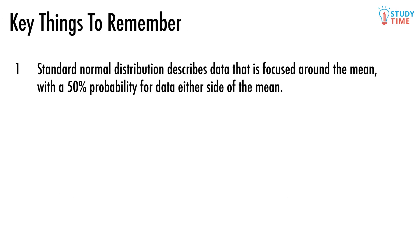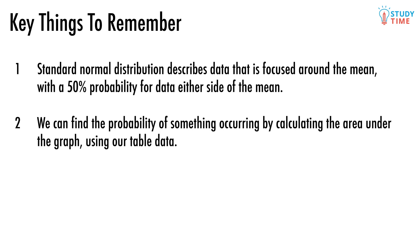Remember, standard normal distribution describes data that is focused around the mean, with 50% probability for data either side of the mean. We can find the probability of something occurring by calculating the area under the graph using our table data.